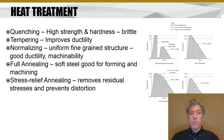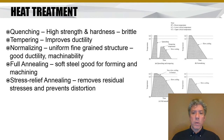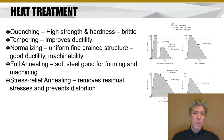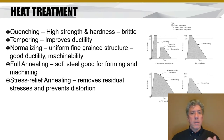Tempering can improve ductility — it's basically reheating and holding at a temperature for a certain amount of time, often sacrificing a little bit of strength but greatly improving ductility. Normalizing gives you a uniform grain structure with good ductility and machinability, but at the cost of strength. Usually this is a trade-off between ultimate strength and ductility.